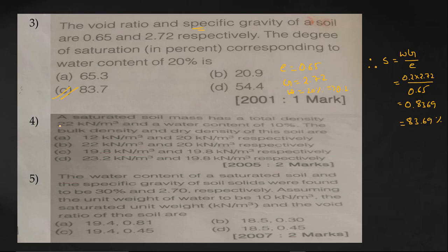The next question: a saturated soil mass has a total density of 22 kN/m³ and a water content of 10%. Find the bulk density and dry density of this soil. Total density means bulk density, so bulk density is 22. Now we need to find the dry density.